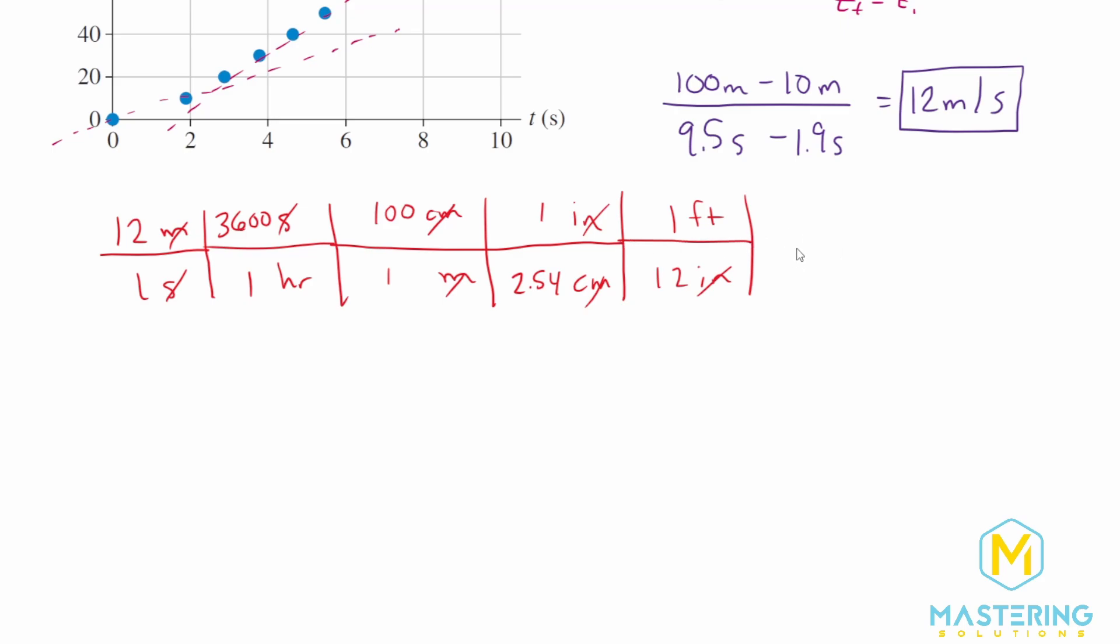And then finally, we can go from feet to miles. In one mile, there are 5,280 feet.